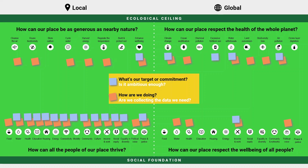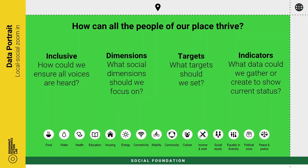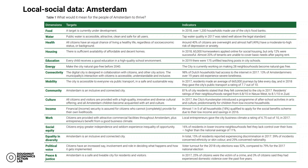Let's use the rest of our time to zoom into each of these four lenses. Where do we start if you want to define and measure the local aspiration of thriving for all the people in your place? That's going to depend on where you are in the world and what thriving means, but here are some entry point questions: Who decides what thriving means? How do we ensure that all voices are heard? Which of the 16 local social dimensions should be focused on? What targets should we set, and what data could we gather to show current status? In Amsterdam, the approach was a qualitative mapping of aspirational statements and goals from official city strategic policy documents, compared with illustrative statistics from published sources.